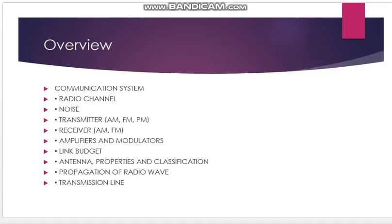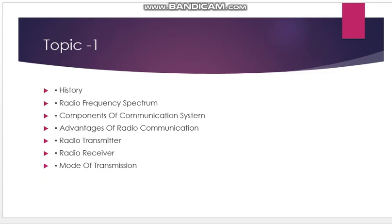First of all, the communication system — we have to know the communication system, Topic 1. In this topic we will discuss about history, radio frequency spectrum, components of the communication system, advantages of radio communication, radio transmitter, radio receiver, mode of transmission, etc.